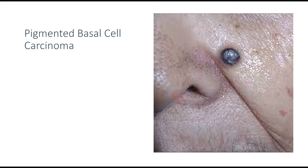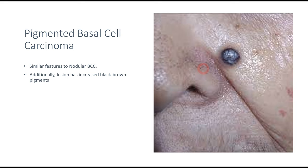In this clinical picture, you can see a lesion in the middle third of the face, but with a very different color. This is called pigmented basal cell carcinoma, which has similar features to nodular basal cell carcinoma. However, the color is the most distinguishing feature — you can see a blackish-brownish appearance, which is characteristic of this subtype. Additionally, pigmented basal cell carcinoma is more common in dark-skinned individuals compared to other types.